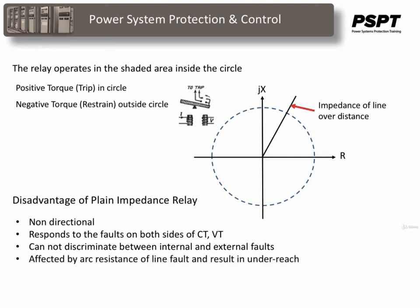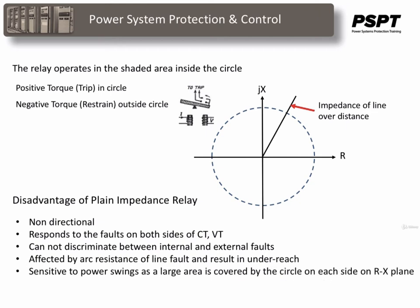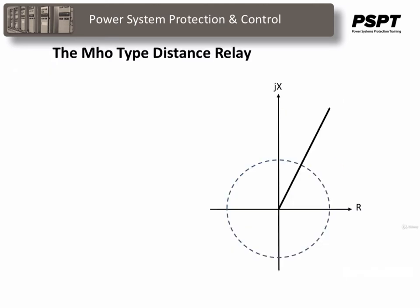The relay is also affected by the resistance of the fault itself. If we add the impedance of the fault — say it's an arc fault or a tree — that has to be added to the impedance, and it could fall outside the protected zone so the relay may not operate. It is also very sensitive to power swings. As a large area is covered in the circle on the R-X plane, the relay has a tendency to be very sensitive during power swings, such as during storm conditions. To mitigate these problems, the mho-type distance relay was developed, also known as the admittance relay, and sometimes called an angle impedance relay.